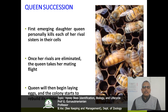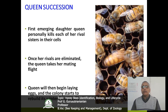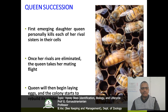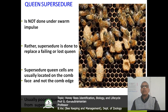Another process is queen succession. The first emerging queen personally kills each of her rival sisters in their cells. Once her rivals are eliminated, the queen takes her mating flight. The queen will then begin laying eggs and the colony starts to rebuild its winter food supply.